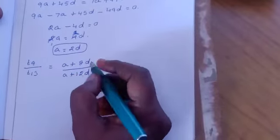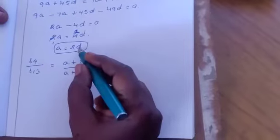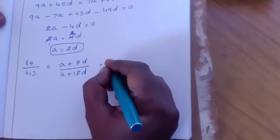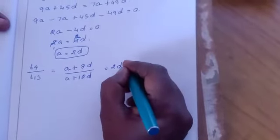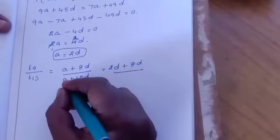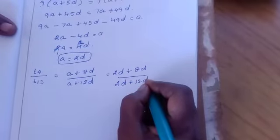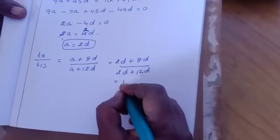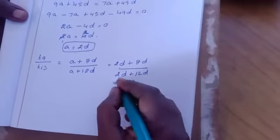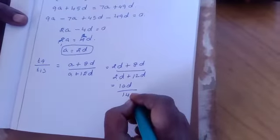Now apply, already we find A in terms of D is 2D. So apply A equal to 2D plus 8D divided by A is also 2D plus 12D. Now 2D plus 8D is 10D divided by 2D plus 12D is 14D.